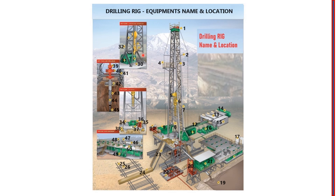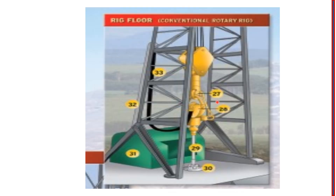The images in the overview are very small, so enlarged images will be shown in the next slides for a clearer view. A list of all serial numbers with corresponding equipment names has been provided. Number 27 is the hook.